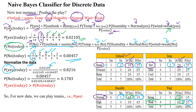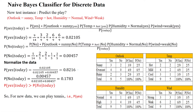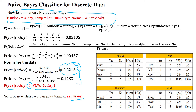We normalize both values: the probability of yes given today is 0.8216, and the probability of no is 0.1783. Among these two values, yes is the maximum. The Naïve Bayes classifier selects the maximum a posteriori probability, so since P(yes) > P(no), the prediction for this new test data is 'yes' — the game will be played on that particular day.